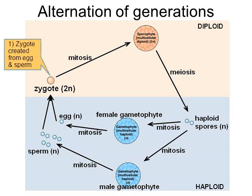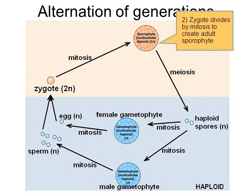Let's start in area one of the diagram with a zygote. A zygote is diploid — it's created from egg and sperm. Since a zygote is diploid, it marks the beginning of the diploid stage, which we call the sporophyte. Follow the arrow in this diagram: the zygote will be created and then will divide by mitosis, and when it divides by mitosis, it will grow into what we call the sporophyte.